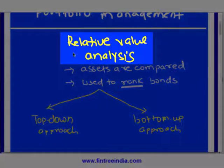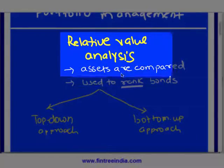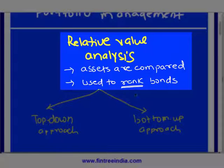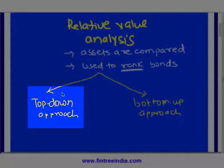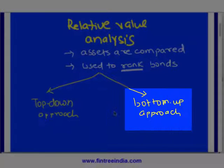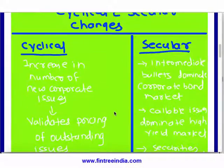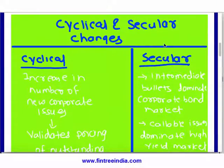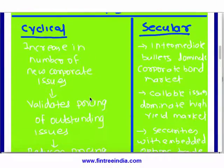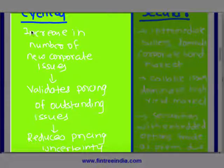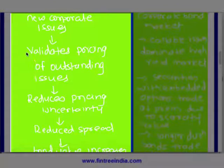In the first learning outcome, we saw there were two approaches: relative value analysis, where assets are compared and bonds are ranked. The two approaches are the top-down approach and the bottom-up approach. Then we have cyclical and secular changes.